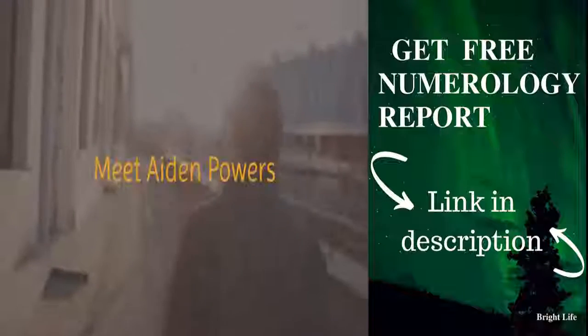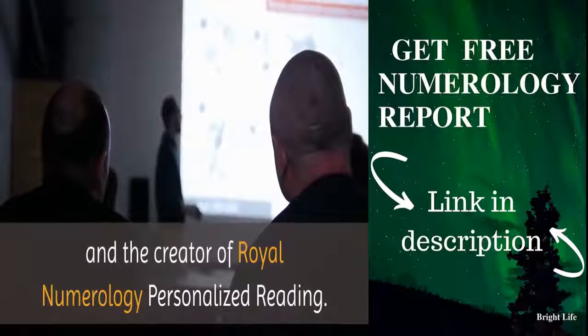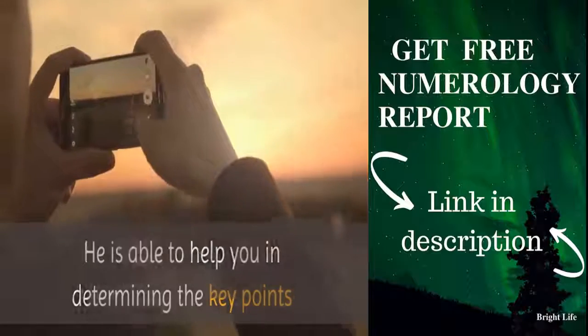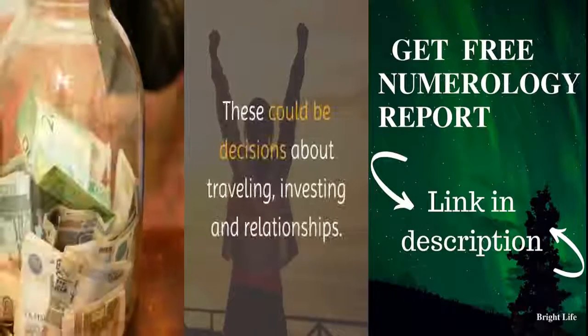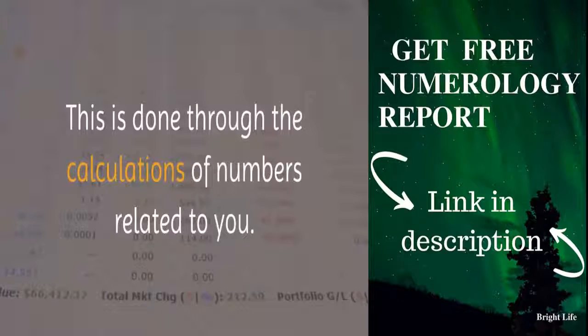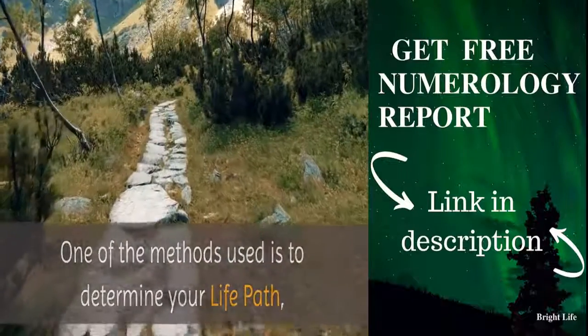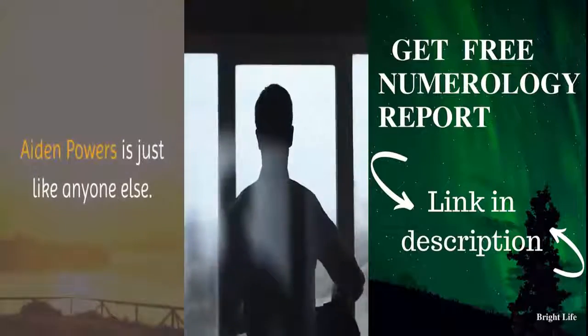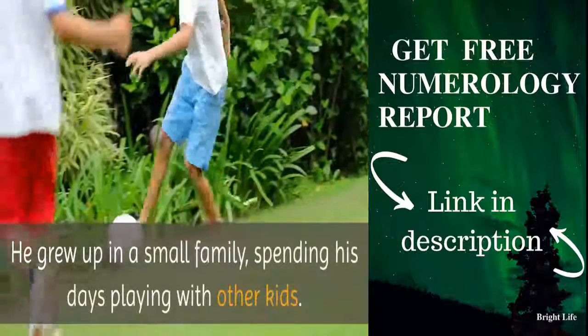Meet Aiden Powers. Aiden Powers is a master numerologist and the creator of Royal Numerology personalized reading. He is able to help you in determining the key points and moments in which to make major moves and decisions. These could be decisions about traveling, investing, and relationships. This is done through the calculations of numbers related to you. One of the methods used is to determine your life path, and this involves adding up the digits of your birth date.